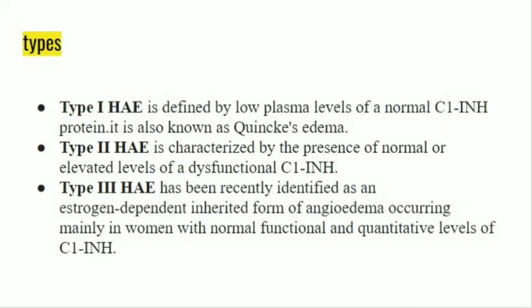Now discussing the types of hereditary angioedema specifically. There are three types. Type 1 hereditary angioedema is characterized by low levels of C1-inhibitor protein. Type 2 hereditary angioedema has dysfunctional C1-inhibitor protein. Type 3 hereditary angioedema is the newly discovered type, which is an estrogen-dependent inherited form occurring mainly in women, with normal functional and quantitative levels of C1-inhibitor protein.